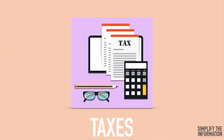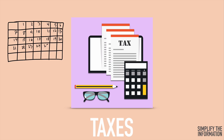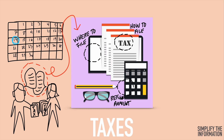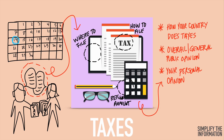For taxes — another complicated topic — let's say it's tax time and you're discussing taxes with your spouse and want to speak confidently in English. Questions like where do you file, how do you file, and how much is your refund are all complicated. But if you break it down: how does your country do taxes, what's the general public opinion of taxes, and what's your personal opinion — you've simplified it. You can't talk about everything at once, but you can talk about important pieces of information related to the topic.